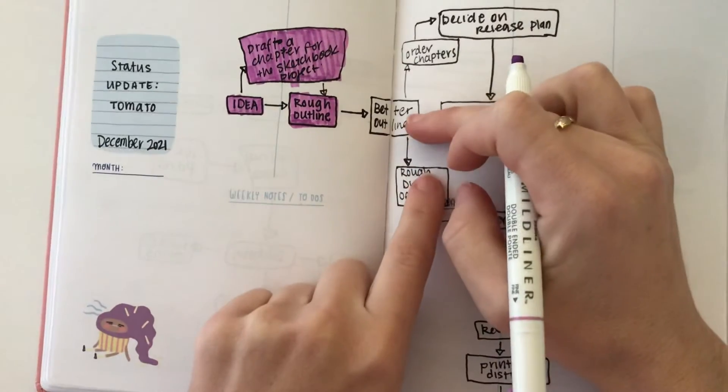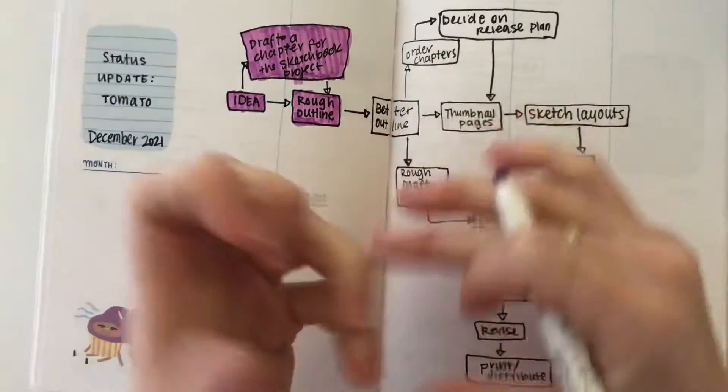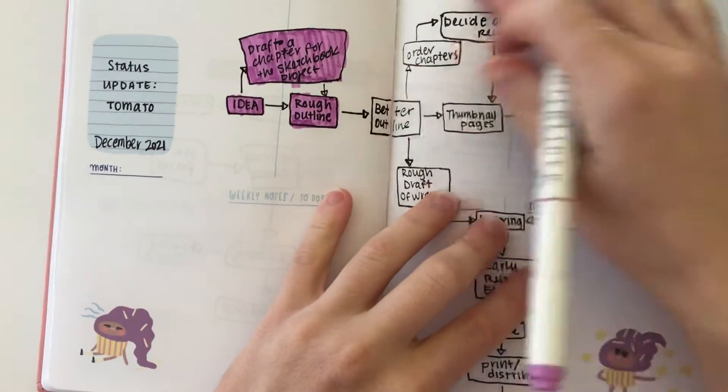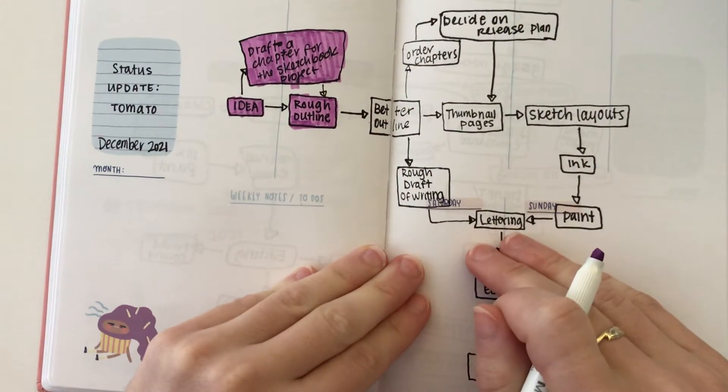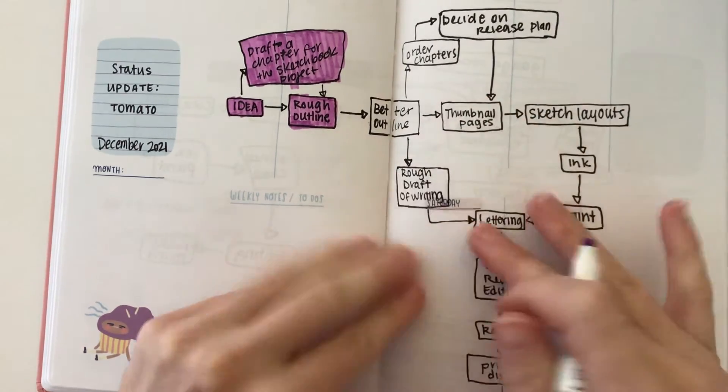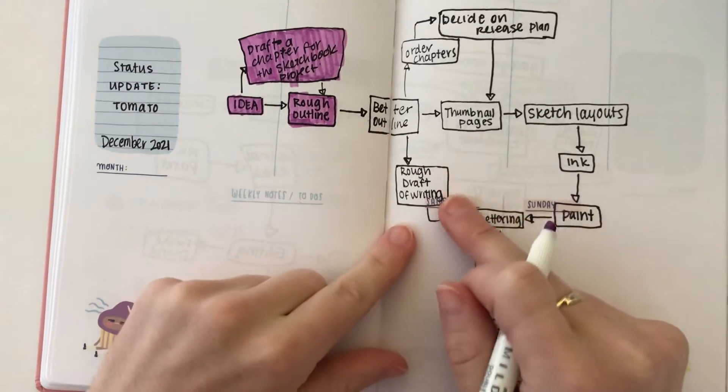I think it branches out into two directions. The one focus more on the writing where I'm ordering the chapters, deciding how I'm going to release it, and then that little arm.